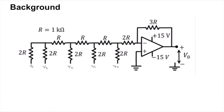Before we start, a little background: suppose the circuit has sources v3, v2, v1, and v0. Notice this is an op-amp in negative feedback, so as long as the output swing allows it, the virtual short causes the minus input of the op-amp to be zero.